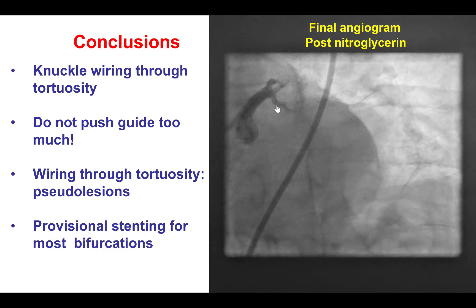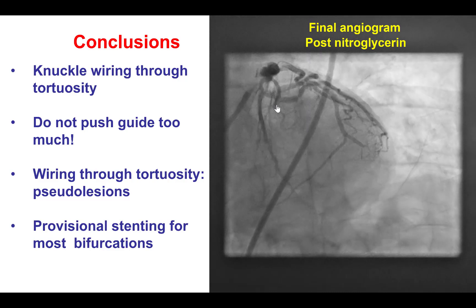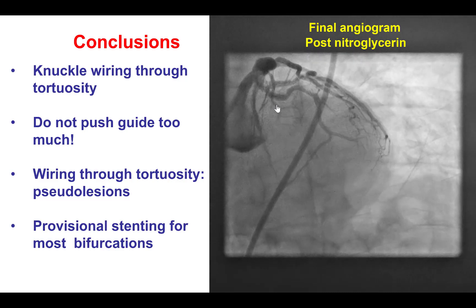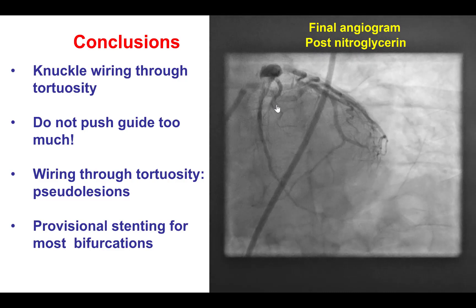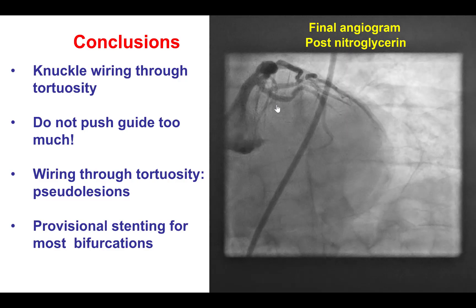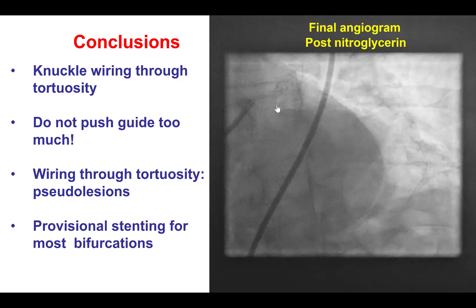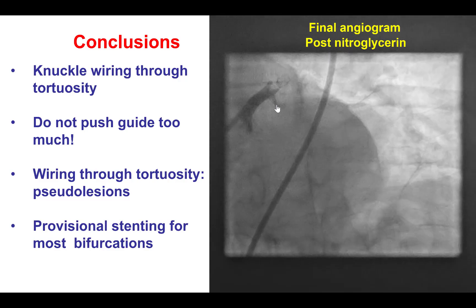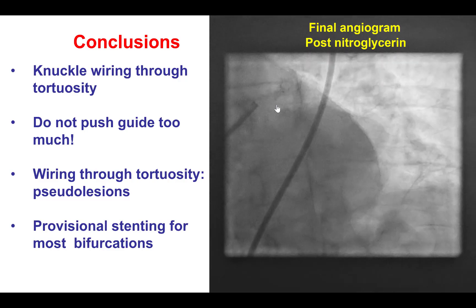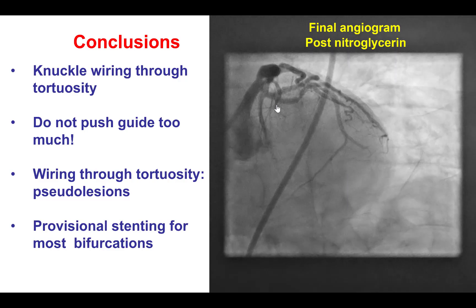For those techniques, you only need to know two techniques. One of them is the T or TAP technique, and the second one is either the culotte or the DK crush technique. In our lab, we usually perform the DK crush technique for most of the two-stent bifurcation strategies. Thank you.